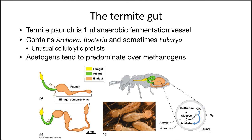Another example of an animal with significant fermentation capacity is termites. While they have a tiny 1-microliter vessel, there are so many of them on earth that they make a significant contribution to the degradation of plant material. Their hindgut contains archaea, bacteria, and some eukarya, which contain unusual cellulolytic proteases able to degrade cellulose. Acetogens tend to predominate over methanogens in the termite gut and produce acetate that the termite absorbs. That brings us to the end of this section on non-human host-microbe interactions — macroorganisms depend on their microbiota and would not be able to survive without them.